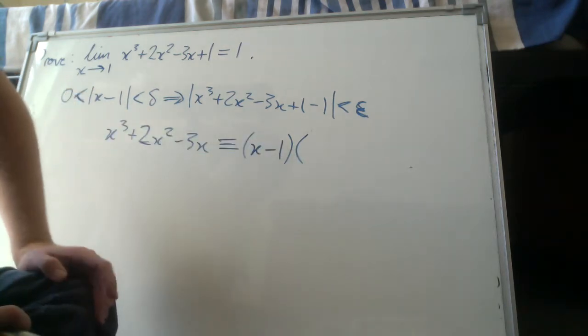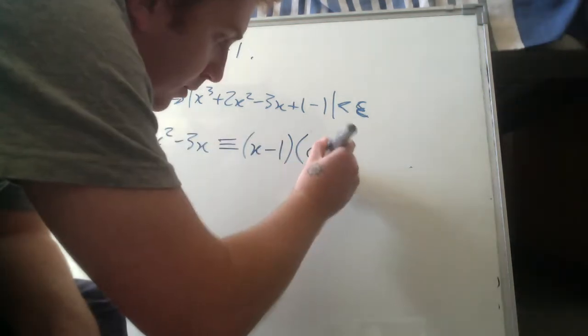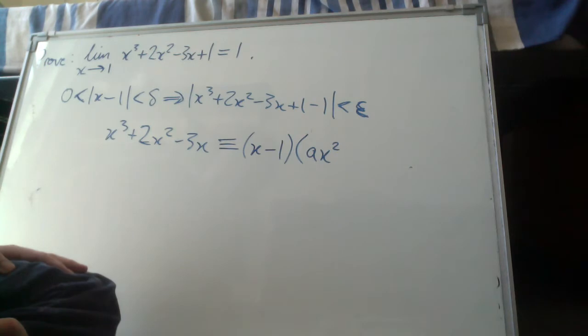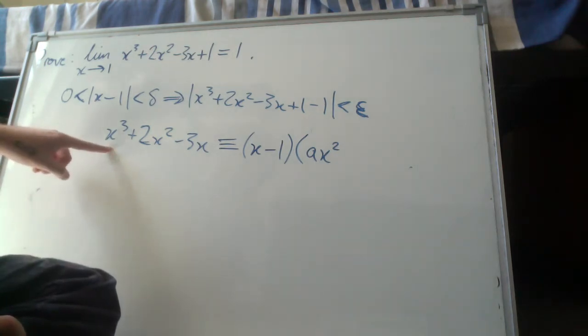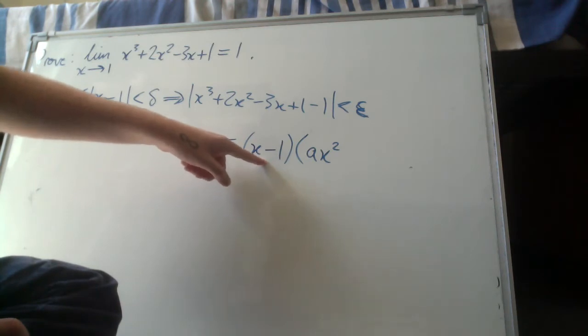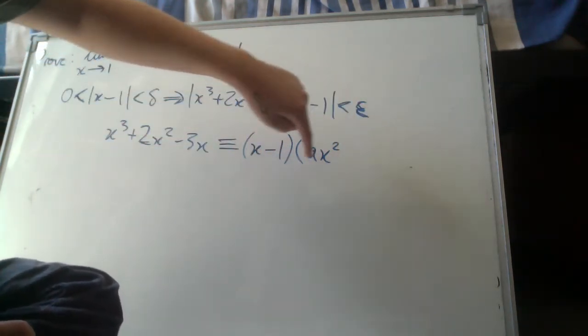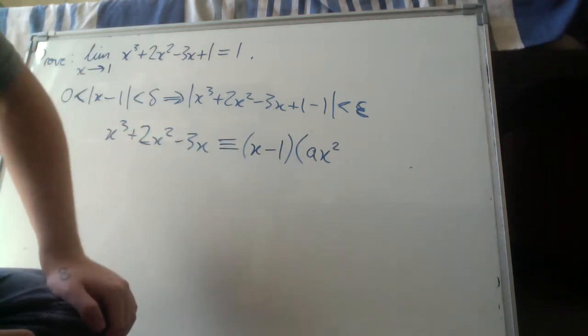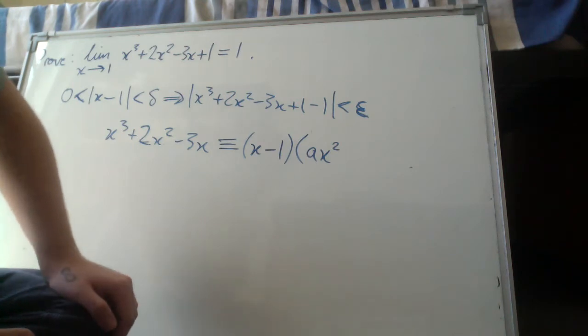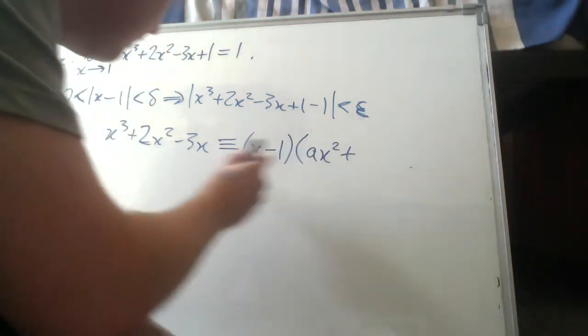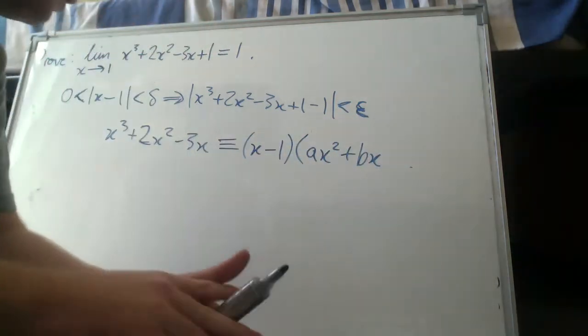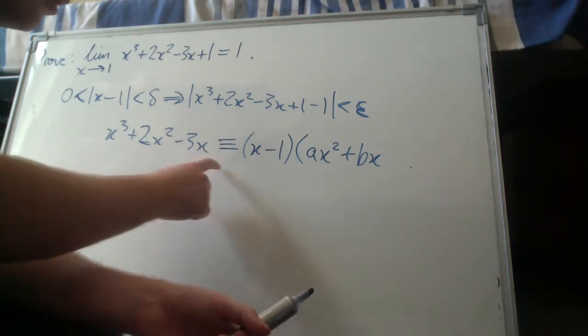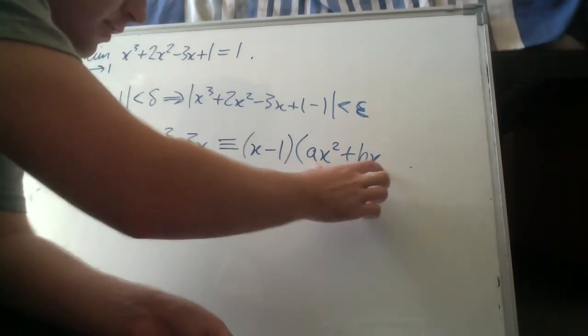But we don't know what the coefficient of the x squared is going to be, so let's just put a variable in, a constant. Now we need a... So because this is of degree 3, and this is of degree 1, the degree of the two polynomials that are multiplying, that are factors of this polynomial, must be equal to 3. So yeah, okay, so we stick another bx in there. Since we don't have a constant term at the end of this polynomial, we don't put another constant term here. So this is sufficient.